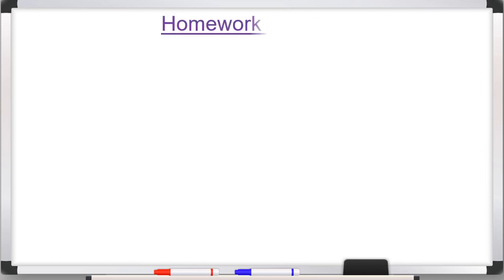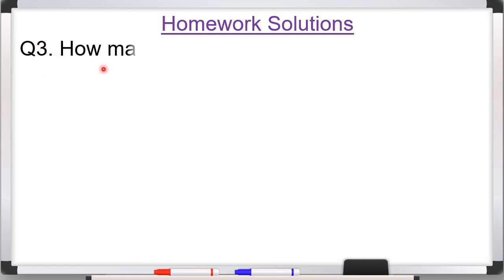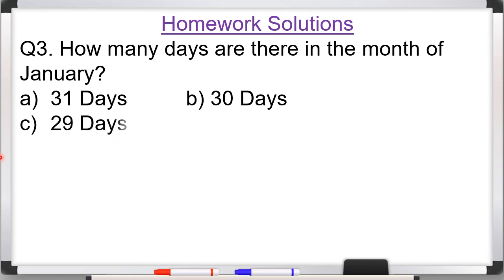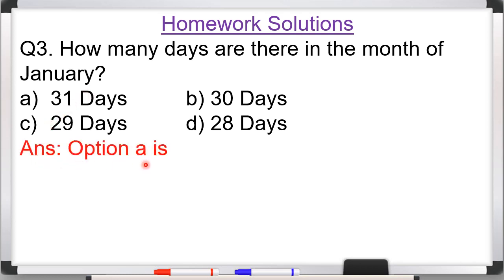Question 3: How many days are there in the month of January? January में कितने दिन होते हैं? Option A: 31 days, Option B: 30 days, Option C: 29 days, Option D: 28 days. Option A is correct — January में 31 days होते हैं। Answer: Option A is correct, 31 days.